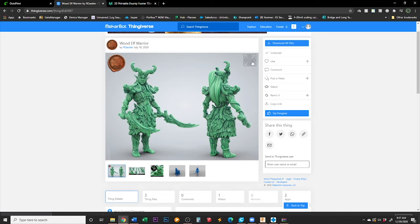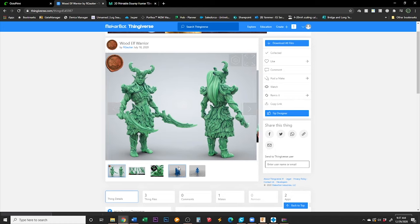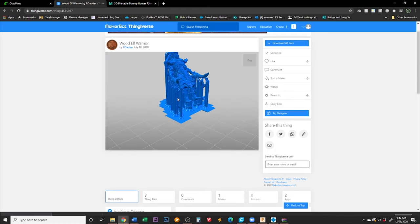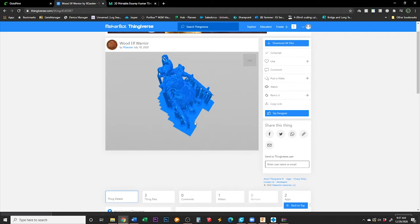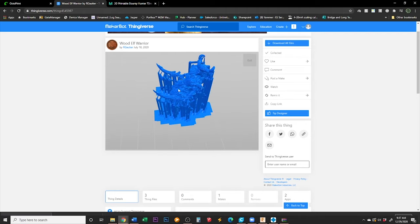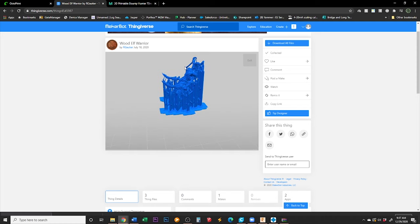First is this Wood Elf Warrior I found on Thingiverse created by R. Gautier. The reason I chose him is because he is very highly detailed and he is printed at the height of about 35mm.